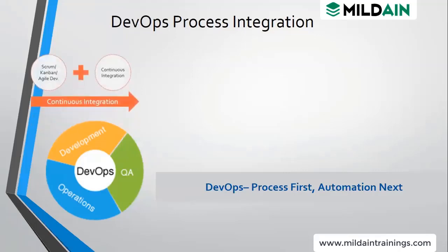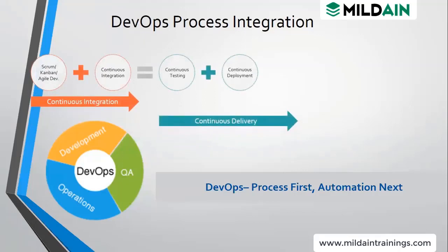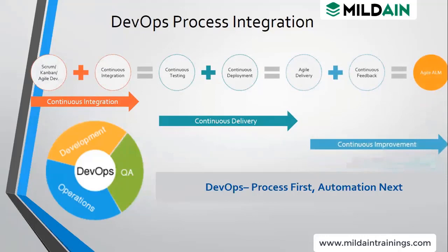If you see, we have continuous integration, then continuous delivery, and then continuous improvement — this is the complete DevOps process. In agile mode we have short two-week sprints. After completion of a sprint there is a complete analysis in one meeting, and we take feedback. Then there is continuous integration after testing and deployment, a continuous feedback loop, and this becomes agile ALM.